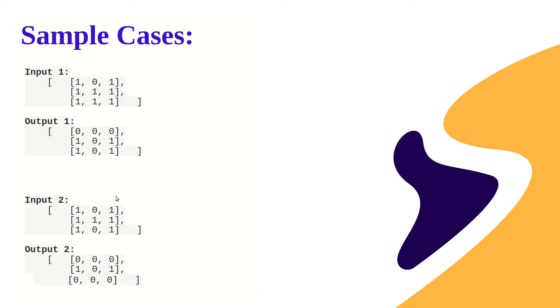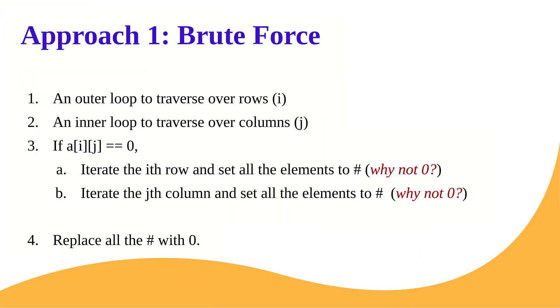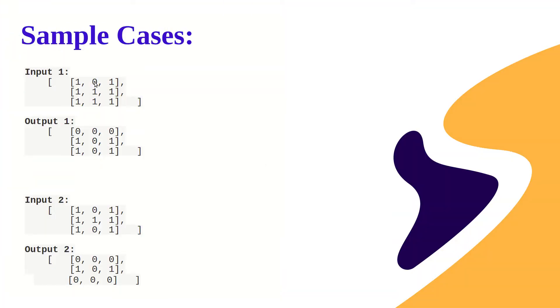There are two approaches we will discuss. The first is the brute force approach, which is not very efficient in terms of time complexity. We use two loops: an outer loop with index i to traverse all rows, and an inner loop j to traverse the columns of each row. If element A[i][j] is zero, we iterate the entire row i and set all elements to a placeholder (like '#'), and similarly iterate the entire column j and set those elements to '#'.